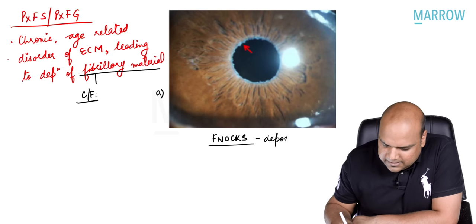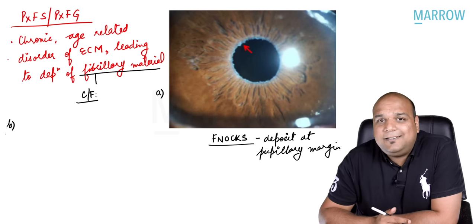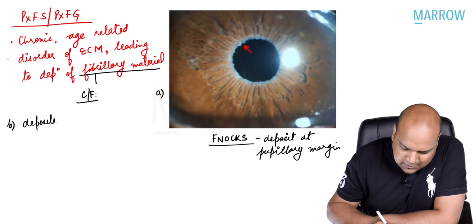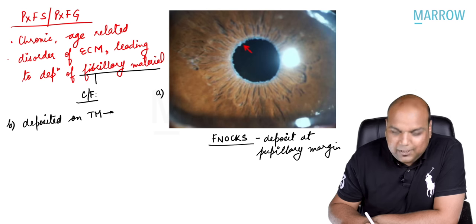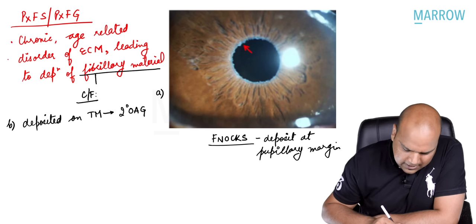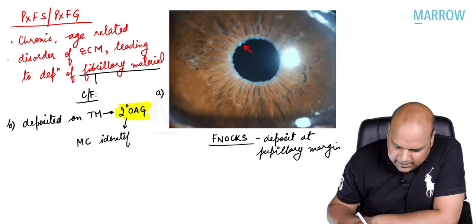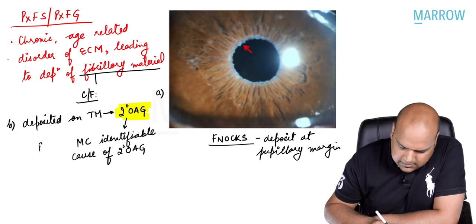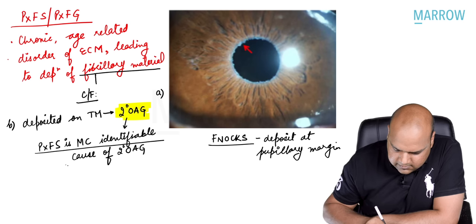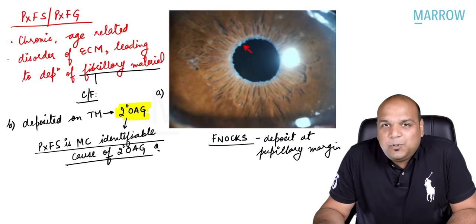Apart from deposit at the pupillary margin, we know the fibrillary material gets deposited on the trabecular meshwork. When it gets deposited on the trabecular meshwork, it obstructs the outflow, leading to secondary open-angle glaucoma. Please remember: pseudo-exfoliation syndrome is the most common identifiable cause of secondary open-angle glaucoma — that is a direct question in itself.